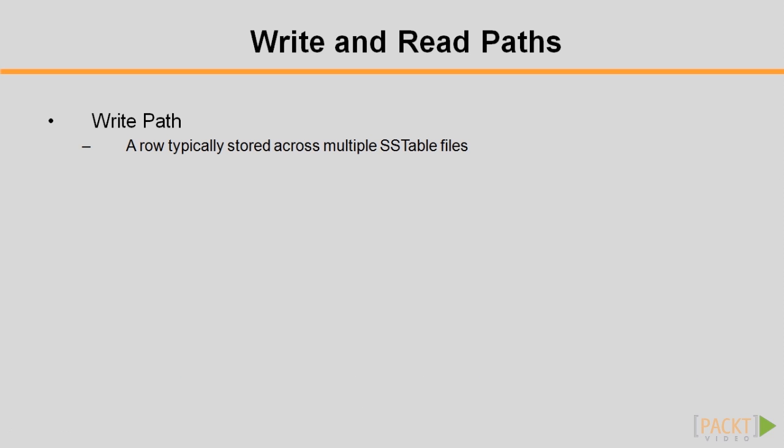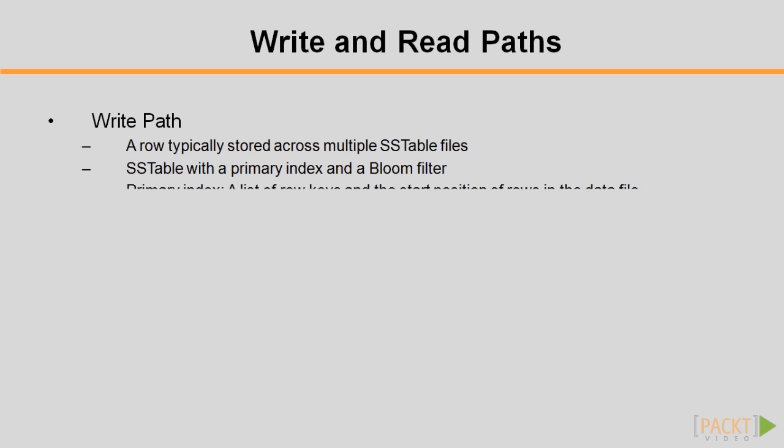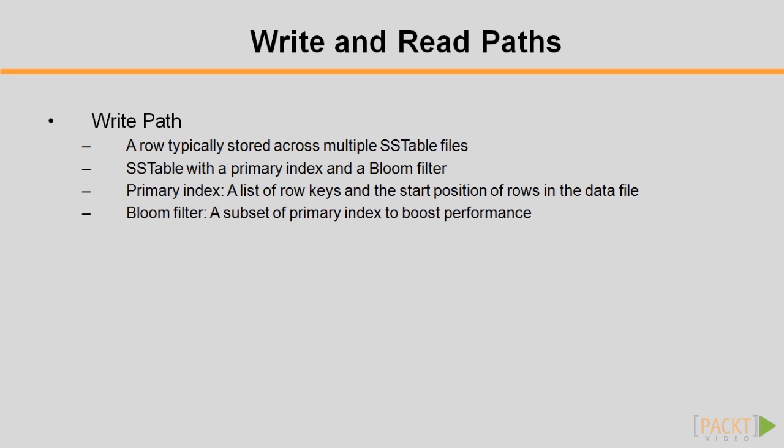Due to the intentional adoption of sequential I/O, a row is typically stored across many sstable files. Apart from its data, an sstable also has a primary index and a bloom filter. The primary index is a list of row keys and the start position of rows in the data file. The bloom filter is a sample subset of the primary index with very fast, non-deterministic algorithms to check if an element is a member of a set. It's used to boost performance.